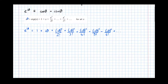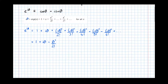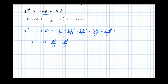Now let's go about simplifying that. I've got 1 plus i theta. Then i squared times theta squared — i squared is minus 1 — so it's minus theta squared over 2 factorial, then plus i cubed times theta cubed. Well i cubed is i squared times i, which is minus 1 times i, so it's minus i theta cubed over 3 factorial. Then i to the power of 4 is just 1, so that becomes plus theta to the power of 4 over 4 factorial, plus i theta to the 5 over 5 factorial.